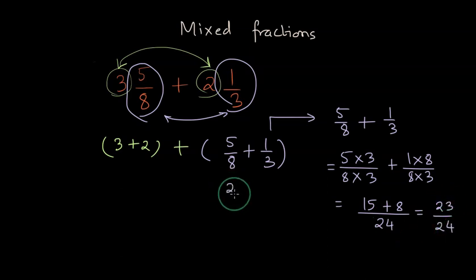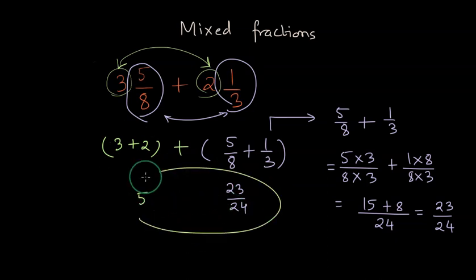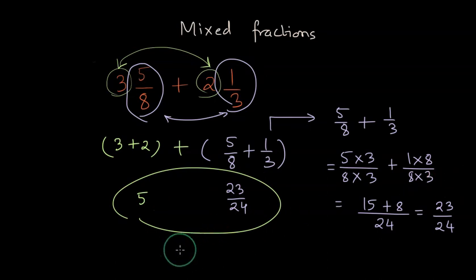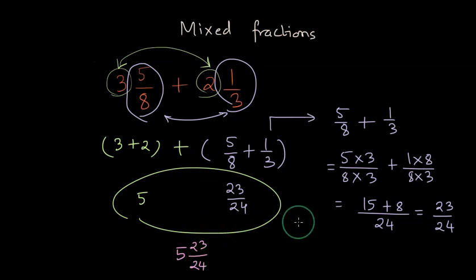You have the result here and you have already combined the whole part, which is 5. So what we have is this result and we can write it together as 5 wholes and 23/24. This is how you have added the mixed fractions.